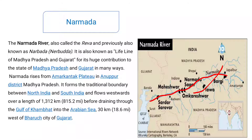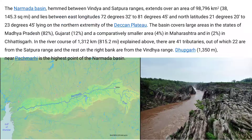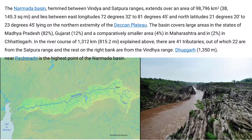The Narmada drains through the Gulf of Khambhat into the Arabian Sea. The Gulf of Khambhat is located near the Arabian Sea. The river flows about 30 km west of Bharooch city in Gujarat, near Bharooch. This is the Narmada River. The Narmada basin lies between the Vindhya and Satpura ranges.